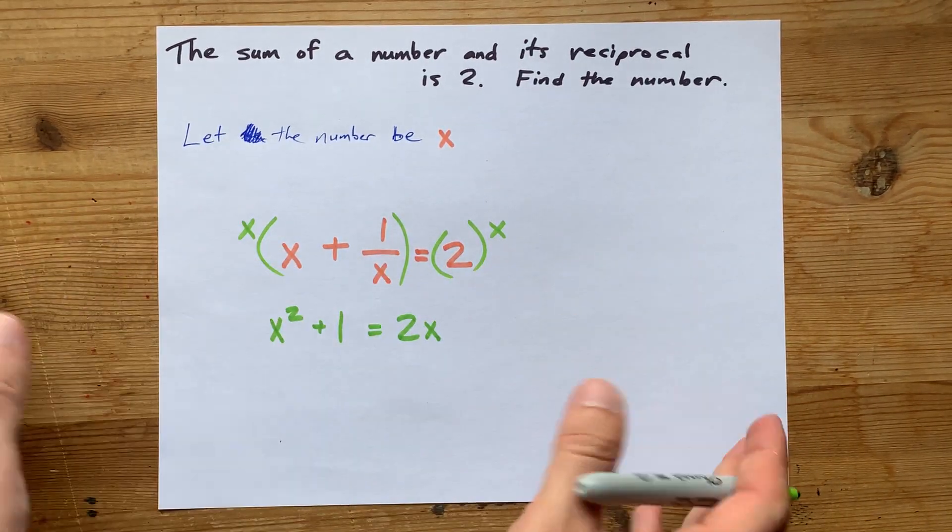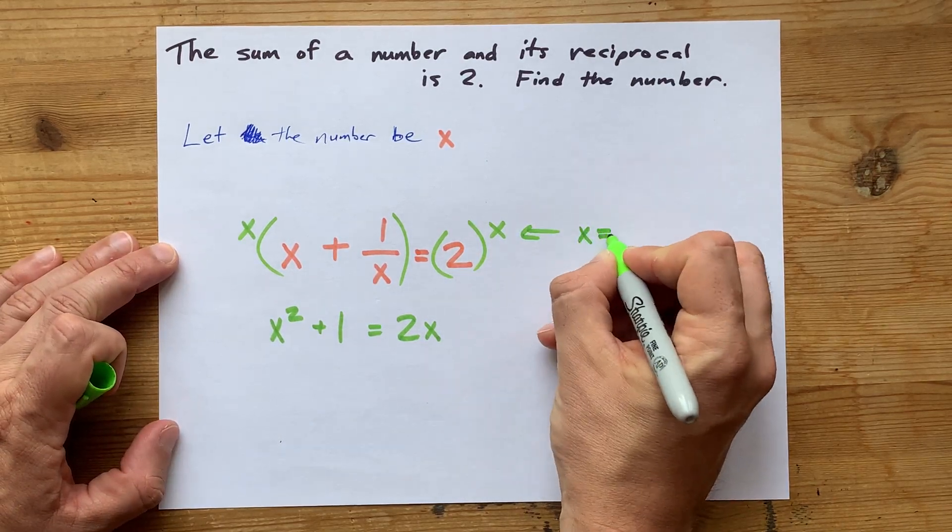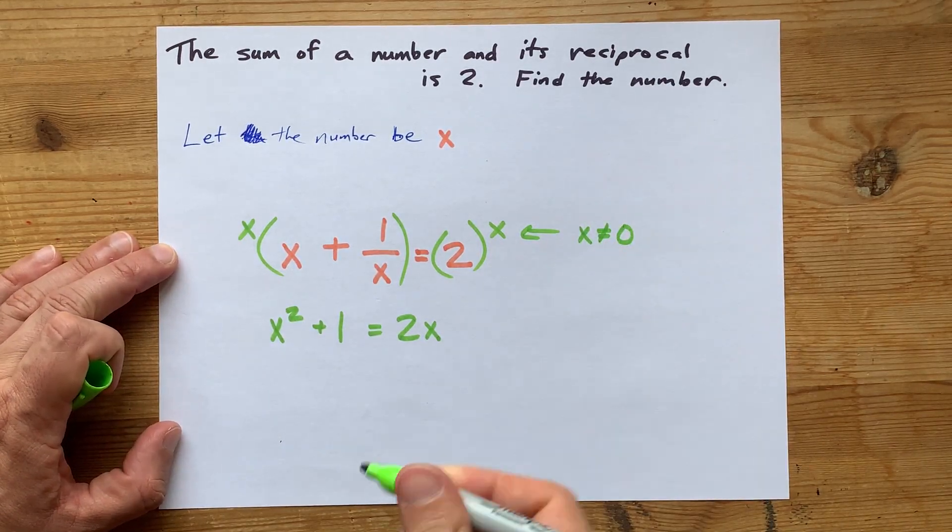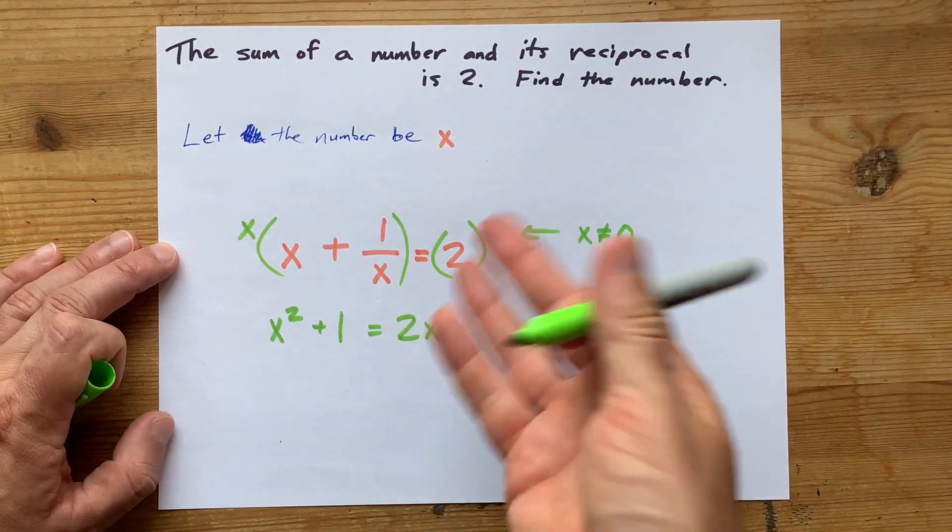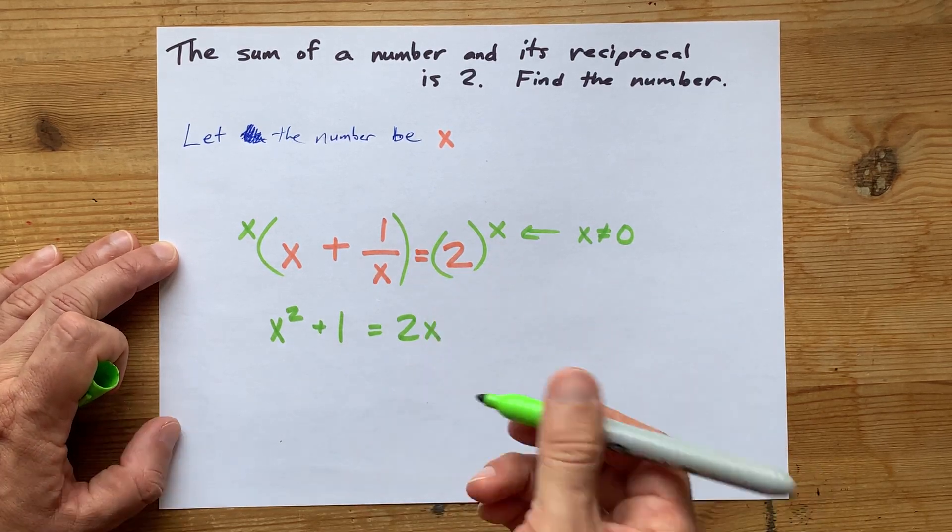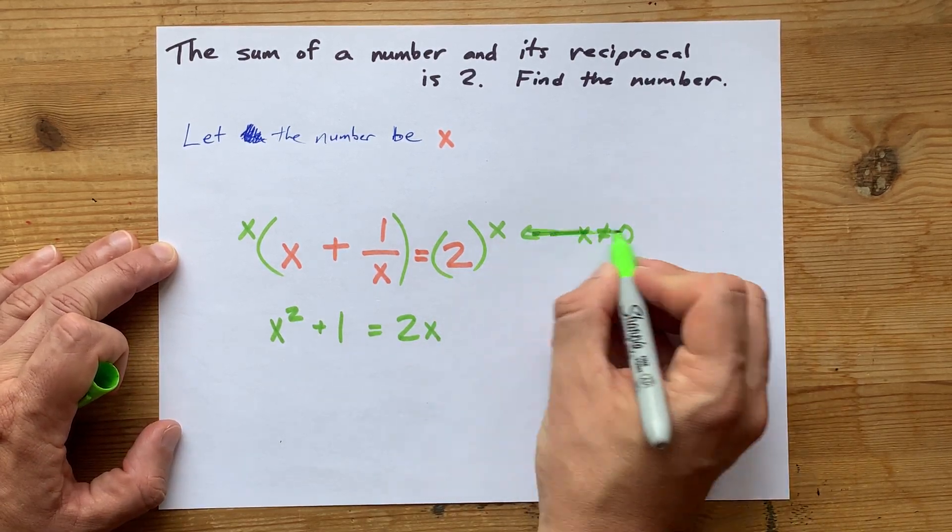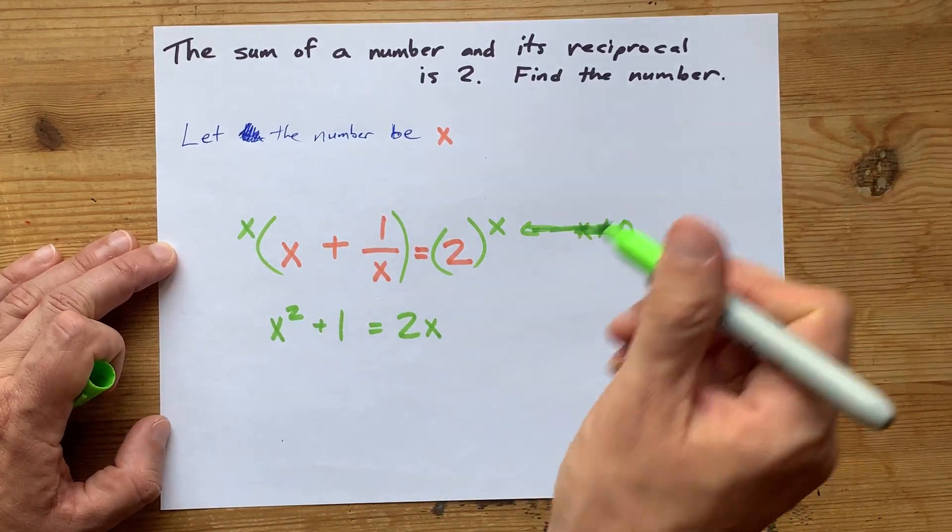Now the only thing I'm going to point out is that 0 doesn't have a reciprocal anyways. Like 1 divided by 0 isn't a number. So we don't have to worry about that. We are allowed to multiply both sides by x because we know it's not 0.